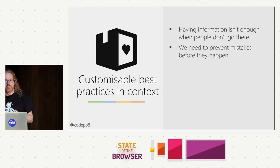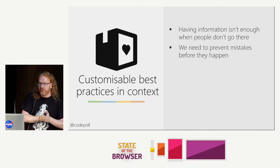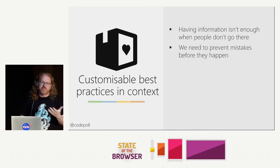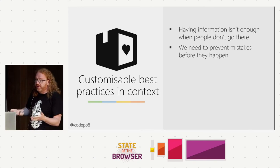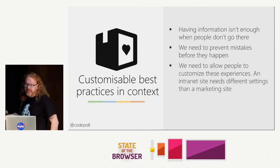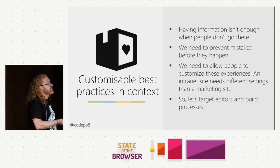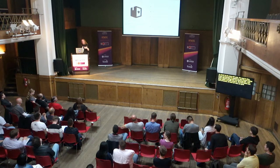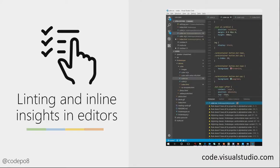We need to prevent mistakes before they happen. Debugging is great, but linting before you do something stupid — typing something and getting a squiggly red line — is also good, because then you don't have to go through a debugging process. Much like a spell checker in Word: while I'm typing it tells me this sounds stupid, it's a mistake. We need to allow people to customize this experience — an intranet site needs different settings than a marketing site. Let's target editors and build processes. We've got webpack, grunt, gulp, broccoli — let's make sure best practices are part of these things.